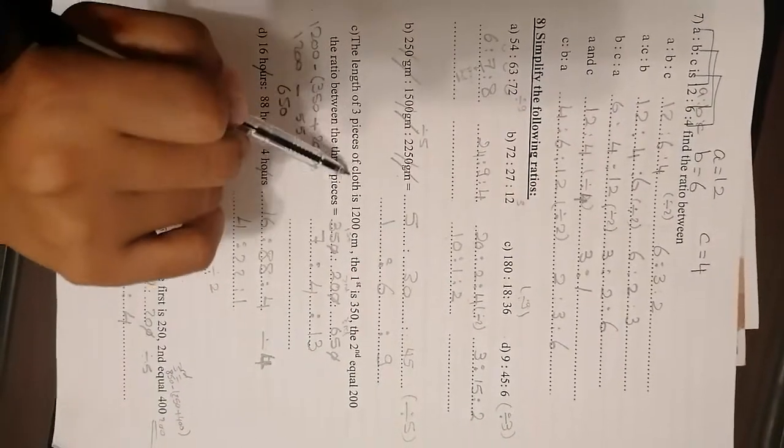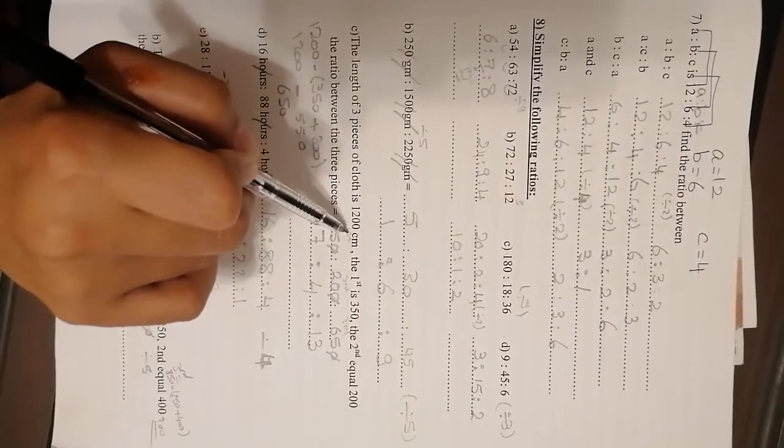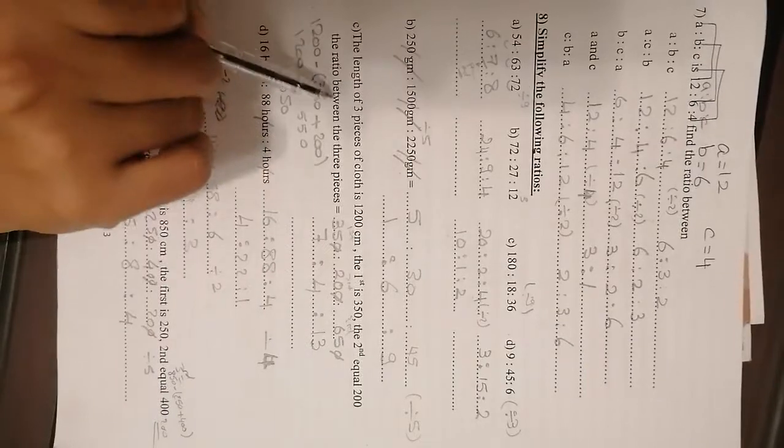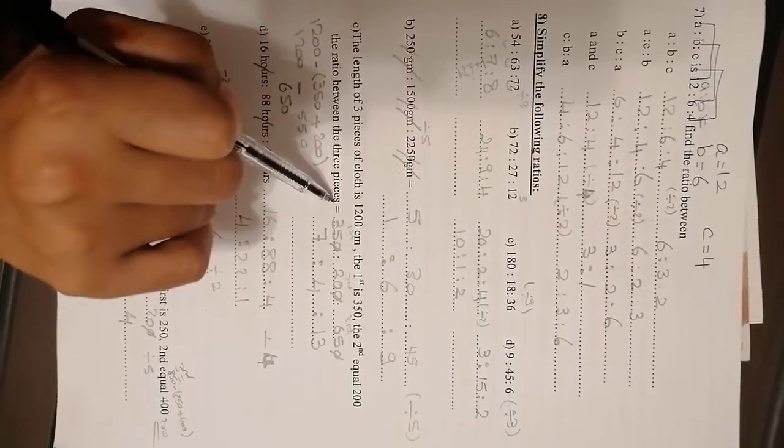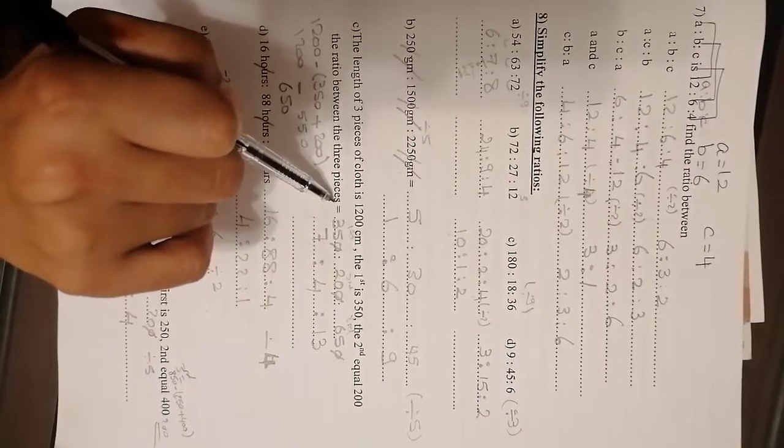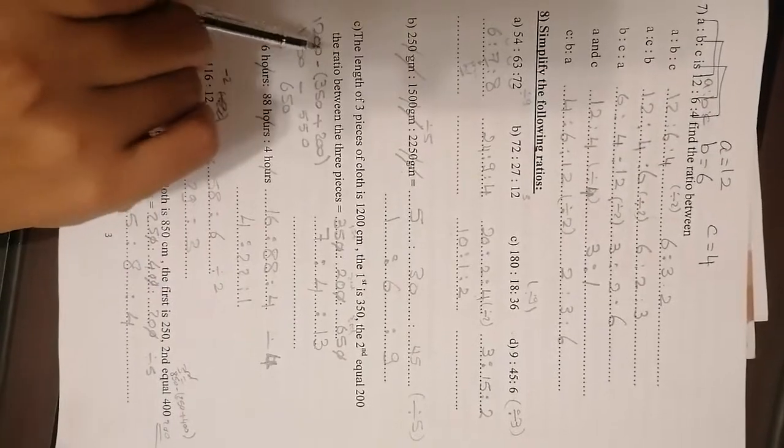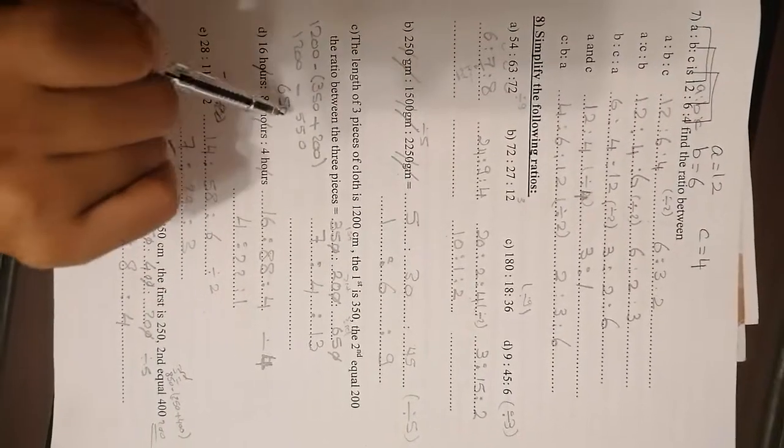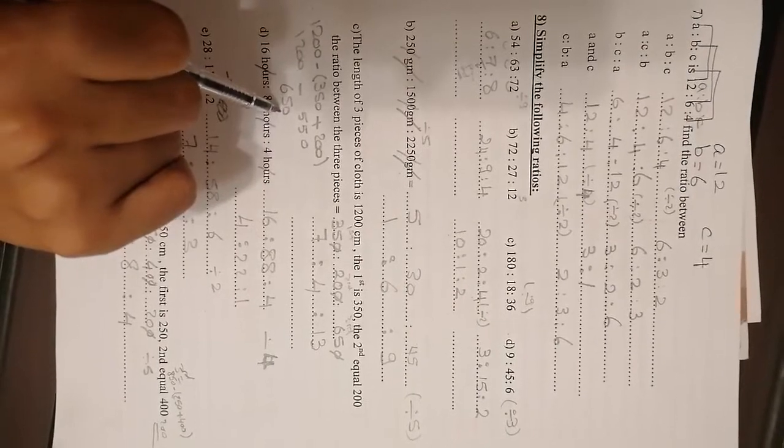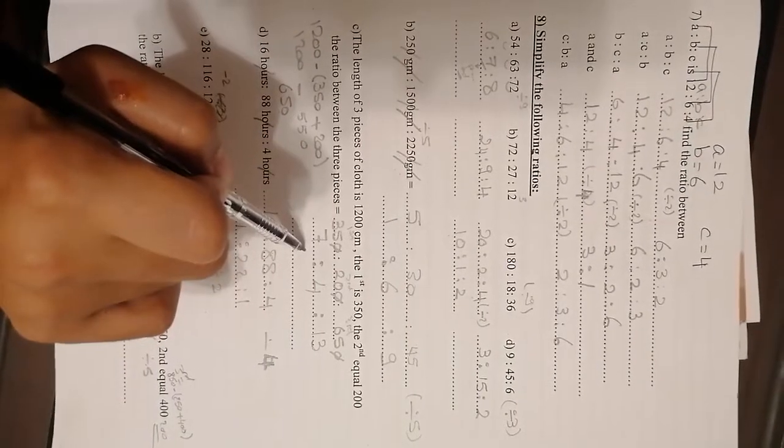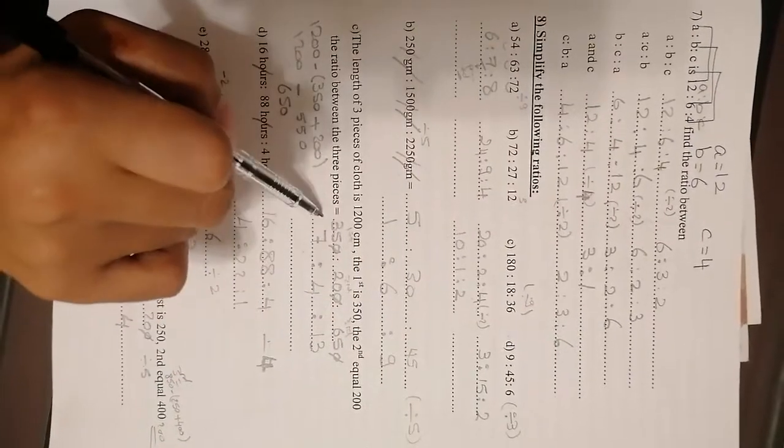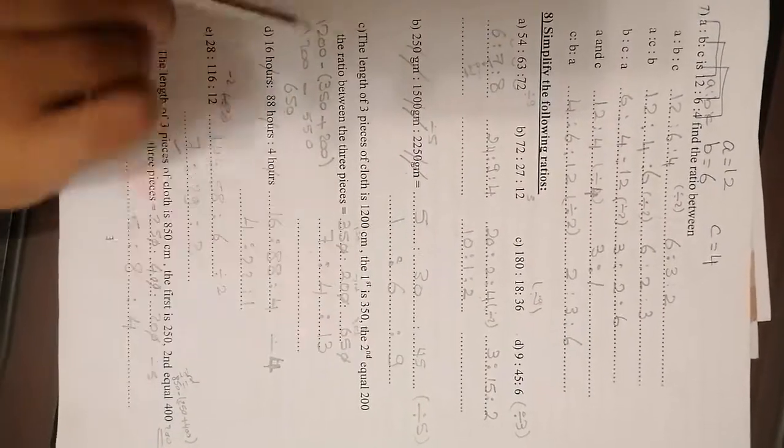Here, the length of the three pieces of cloth is 1,200. The first is 350, the second is 100. I want the ratio between the three pieces. Then I want to find the third one. How can I bring the third one? You will bring the total minus the first plus the second. So it will be 650. Now I can bring the ratio easily. You are going to cross the zeros together. Then they are table 5 divided by 5, and you will find the answer.